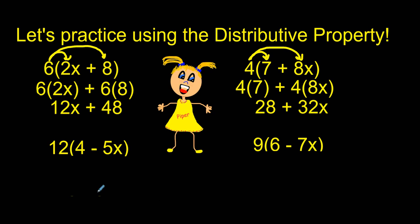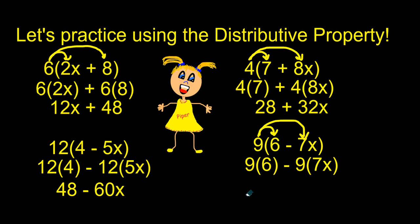Let's check out the next one. Once again I want to draw those arrows to show you that we are distributing 12 multiplication by 12 to both terms inside the parentheses. Now I'm going to rewrite it. 12 times 4, notice the minus sign this time stays the same, the operation symbol stays the same, and 12 times 5x. We get 48 minus 60x. And our final one, again draw those arrows, distribute the multiplication. We get 9 times 6 minus 9 times 7x. 9 times 6 is 54 and 9 times 7x gives us 63x.